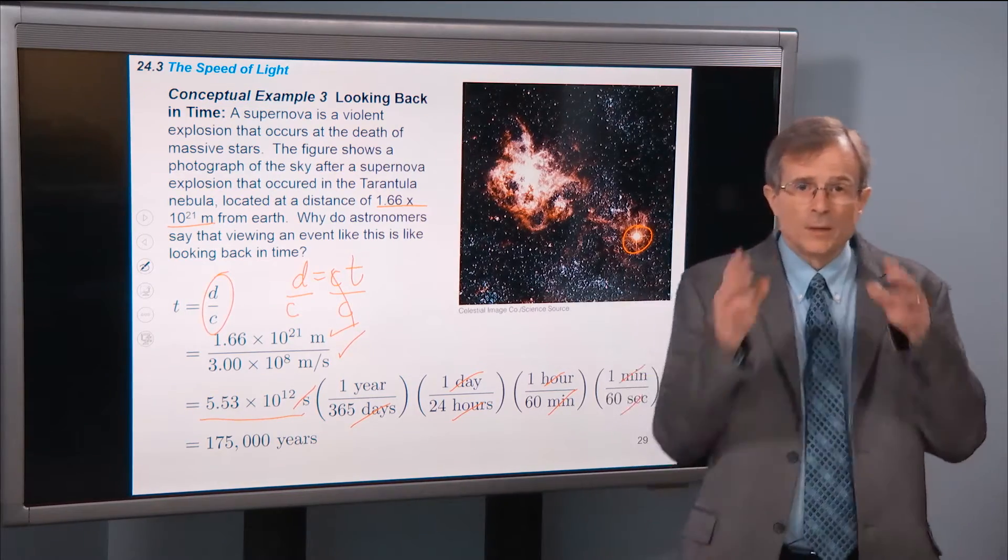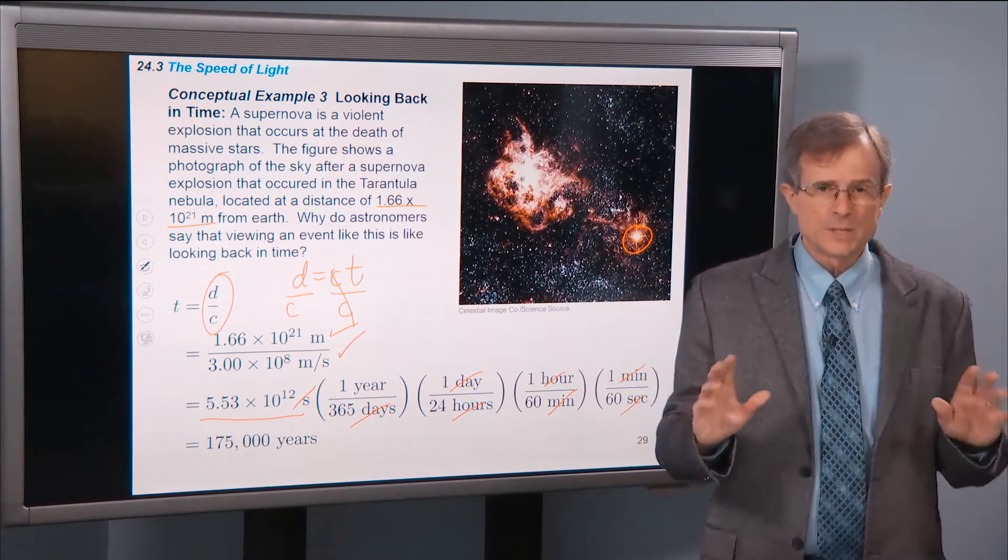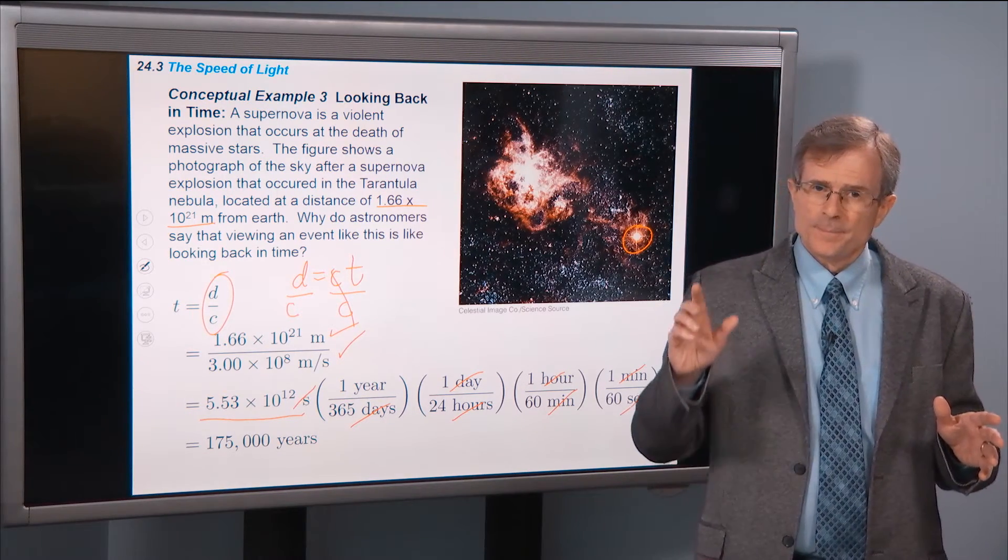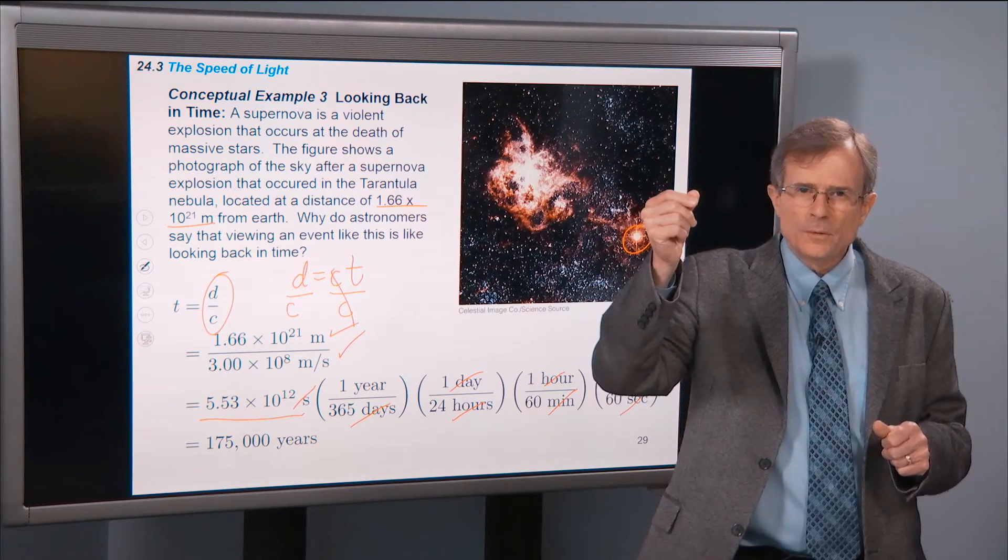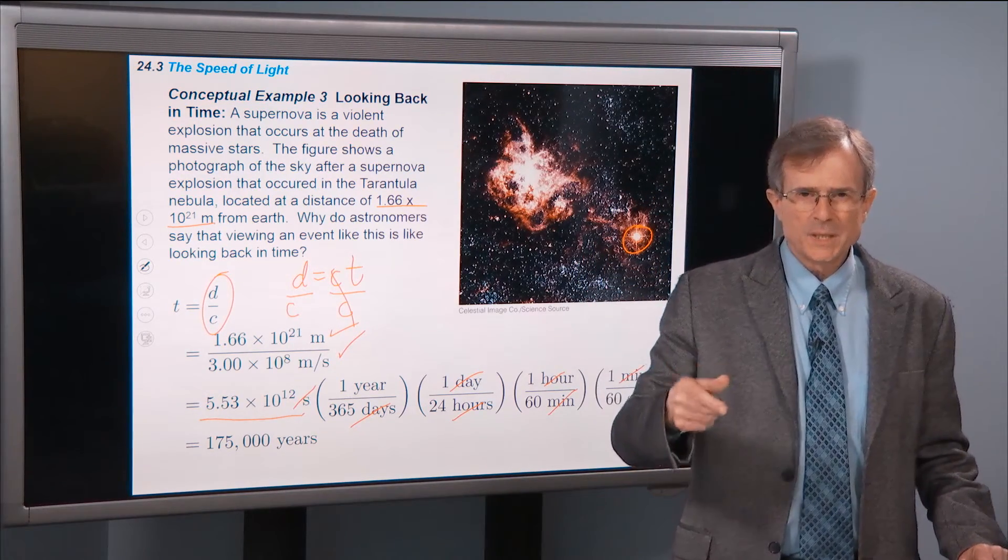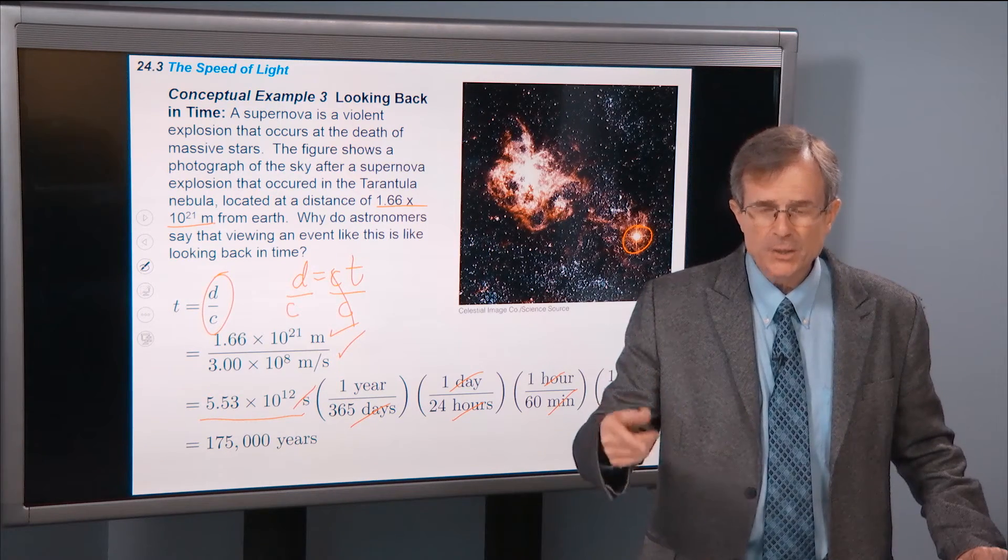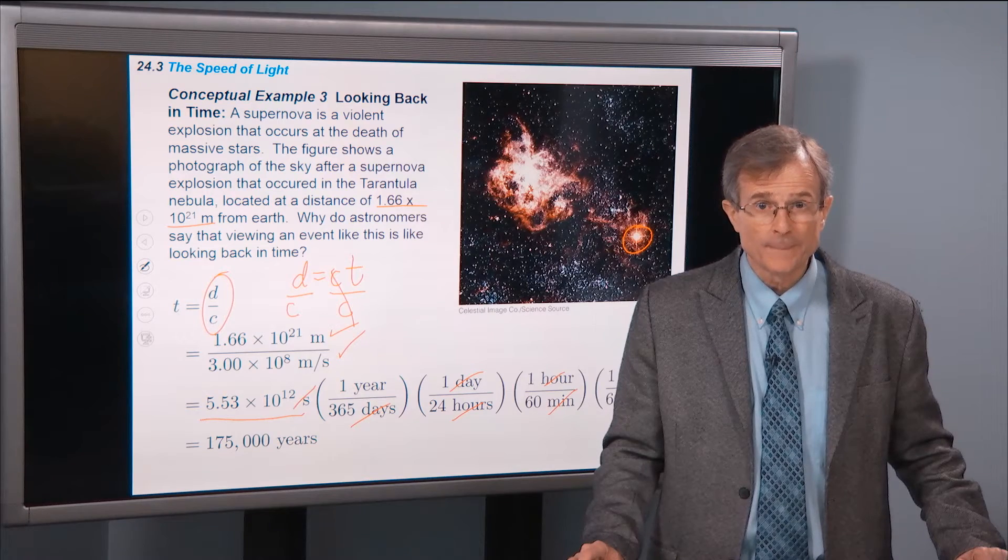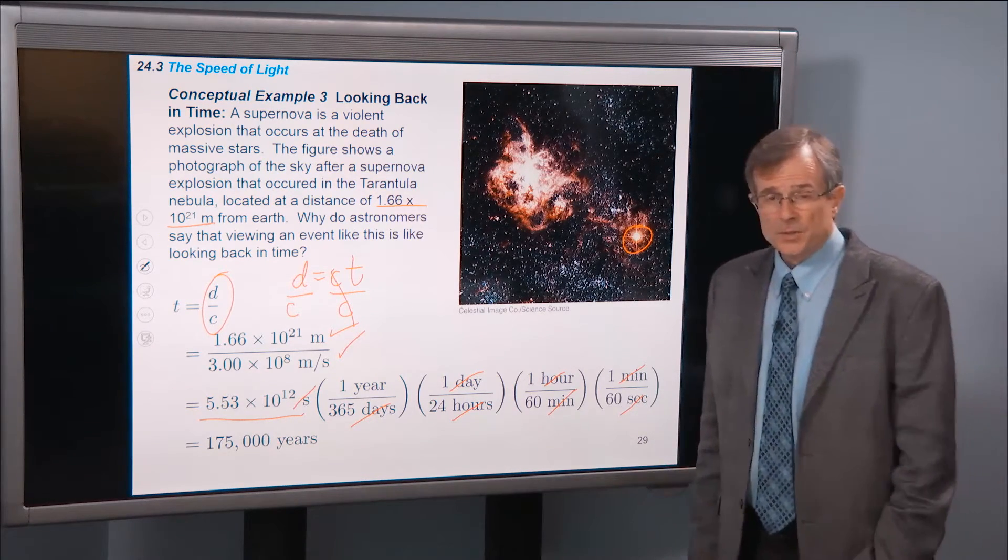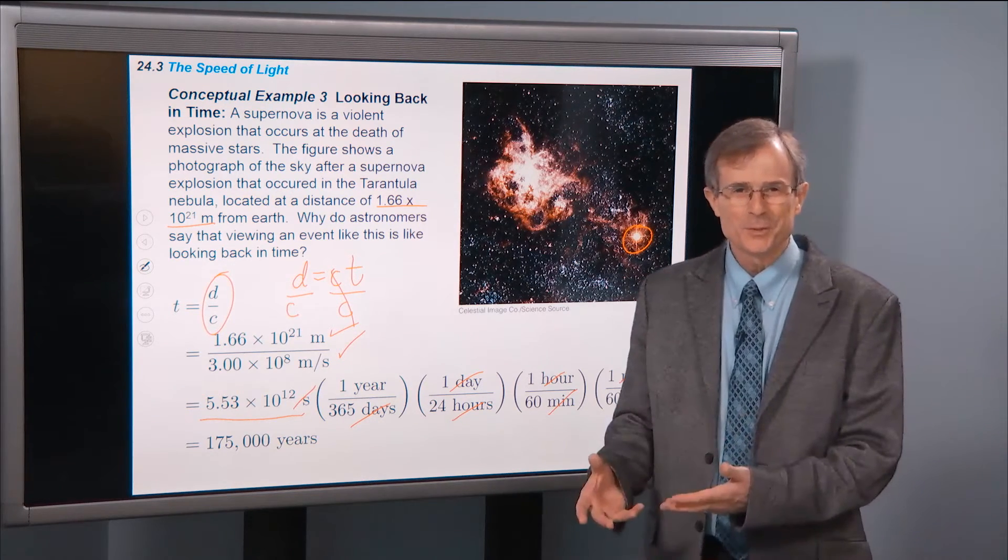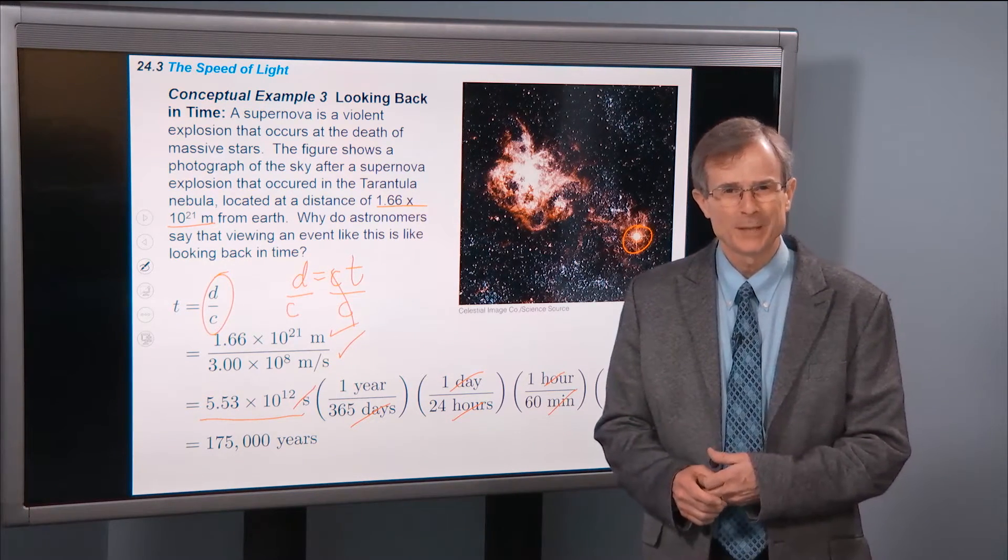Then you get an answer, and this second cancels this second here. You get an answer in years of 175,000 years ago. So when that event was seen 10 years back or whenever it was, the individuals who saw that event through their telescopes were seeing the event that actually had occurred 175,000 years earlier. And so it was long old news by the time we received information about that event.